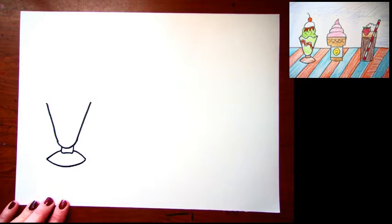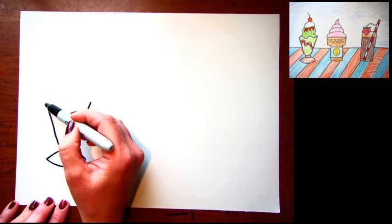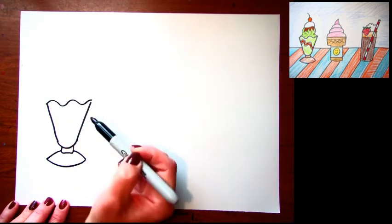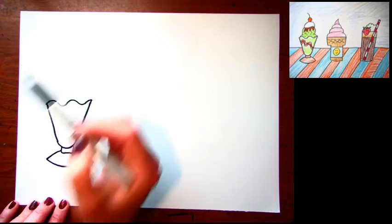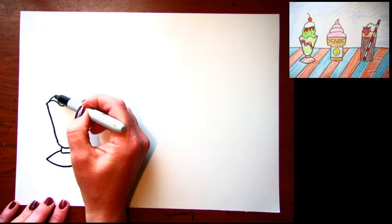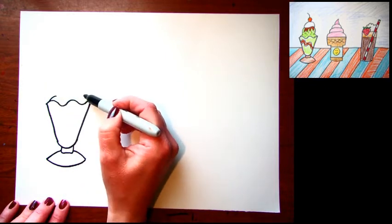Now I'm just gonna do a wavy line from one side to the other and we have our hot fudge sundae container. Now we're gonna start making the ice cream inside. You can make two little short lines on each side and then a nice big scoop of ice cream that curves again going up.